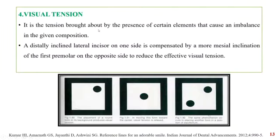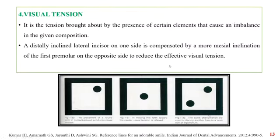Visual tension is brought about by the presence of certain elements that cause imbalance in the composition. For example, if a circle is present at one corner of a page, it will create visual tension. Moving the circle to the center or adding another circle at the opposite end creates balance. A dental example is when a lateral incisor is distally inclined on one side, creating visual tension; to compensate, we can create a more mesial inclination of the first premolar on the other side.